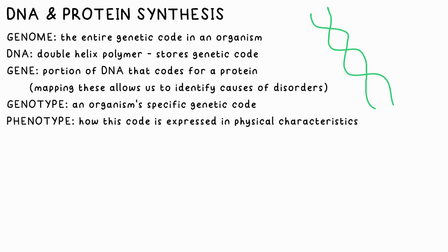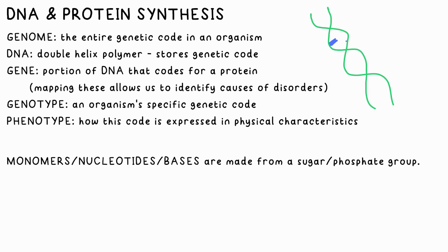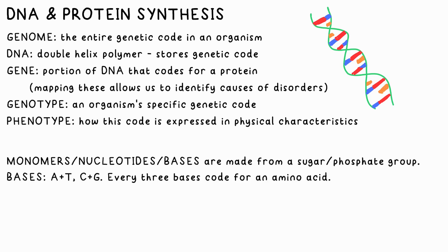That affects your physiology. The monomers between two strands of DNA are called nucleotides, and they're made from a sugar and phosphate group. There are four types: A, T, C, and G. A and T always go together in the sequence, as do C and G.